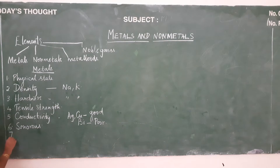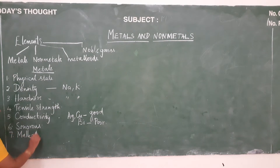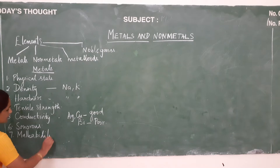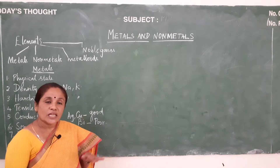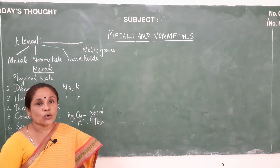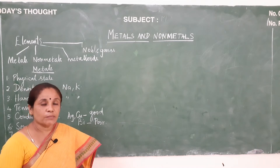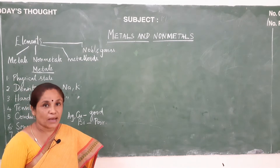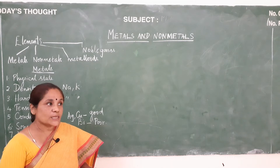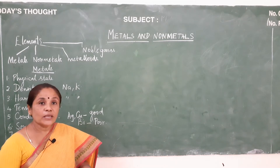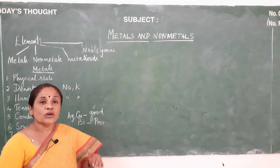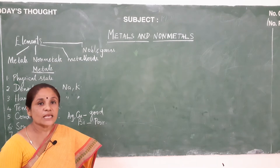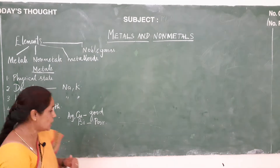This property of metals is called sonorous, and that is why we use these metals to make temple bells. The next property is malleability. Metals can be beaten into thin sheets and this property is called malleability. For example, aluminium can be beaten into very thin sheets — we call them aluminium foils, which are used for food storage.